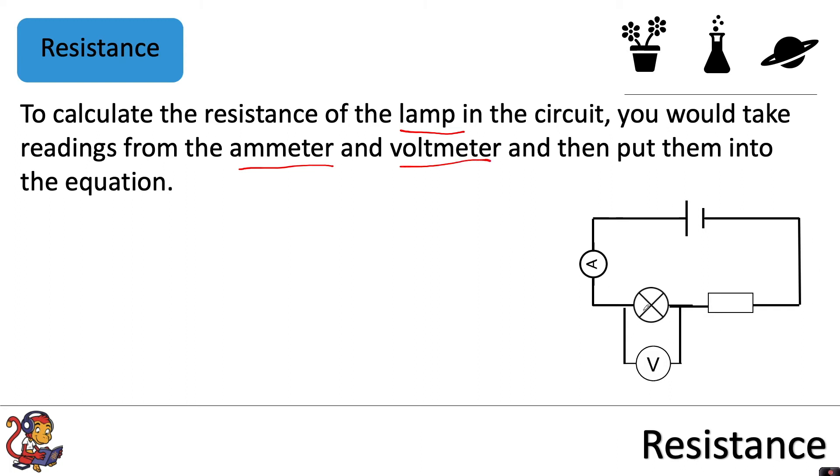So this is a series circuit with our lamp here and a resistor here. We've got the ammeter in the same loop as everything in series, which is the right place for it to be, and we've got the voltmeter parallel to that component.